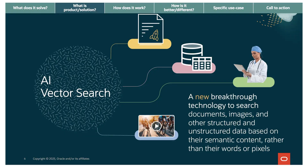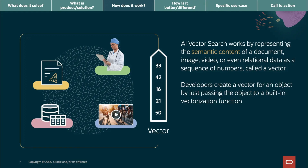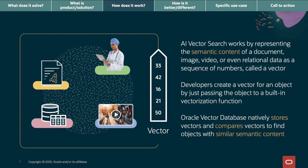But how does this really work? AI Vector Search represents the semantic content of any data — documents, images, videos, or relational data — as a sequence of numbers called a vector. These vectors are stored natively in Oracle Database and compared to find other similar kinds of vectors. Three key points: developers create vectors using built-in functions, vectors live alongside your business data, and Oracle compares vectors to find semantically similar content. Oracle handles the complexity — you get the results.